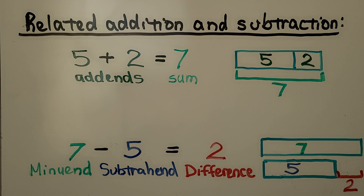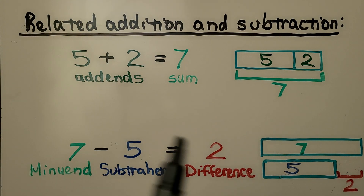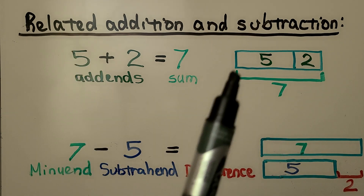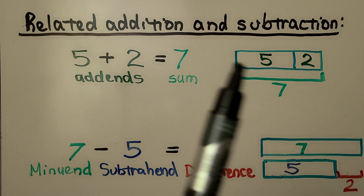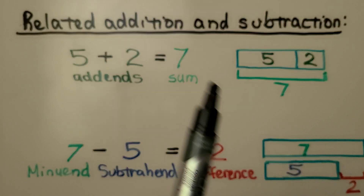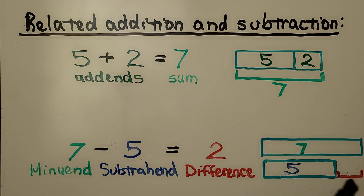We can see what bar models look like for related addition and subtraction number sentences. For 5 plus 2, we use one big bar with the addends — 5 and 2 — split inside, and the sum is shown below. For subtraction, 7 minus 5, here's our minuend and subtrahend, and the difference goes here.